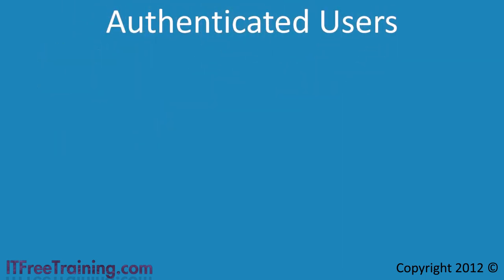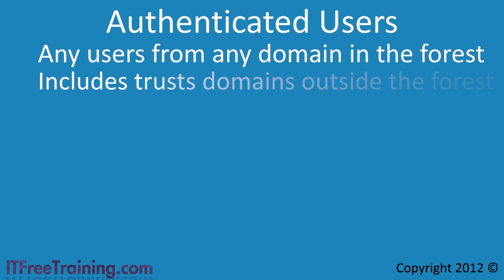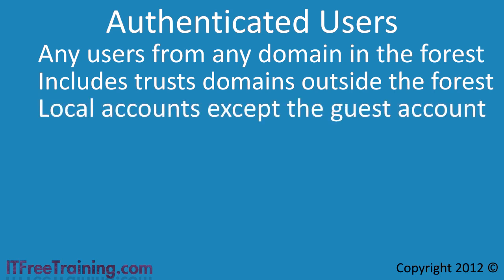In some cases, you may have a resource that you want to give access to users that have been authenticated and thus have a valid user account. The next special identity, authenticated users, allows you to do this. This contains any users that have been authenticated from any domain in the forest. If you have any external domains connected via a trust, users from these domains are also included in the authenticated users special identity. The only authenticated users that this does not include is the local guests on the computer. If you want to ensure that only users with a working user account have access to a resource, assign the resource the authenticated users permission.